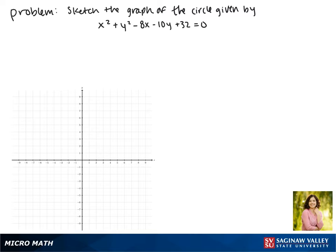Today we'll be sketching the graph of the circle given by x squared plus y squared minus 8x minus 10y plus 32 equals 0. In order to graph this, we want to get this into the standard form of our circle. So what we need to do is start by completing the square.